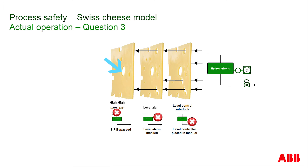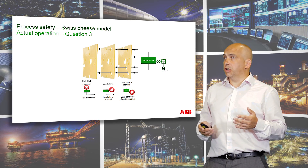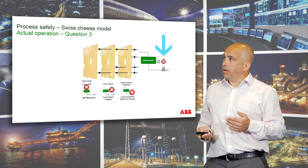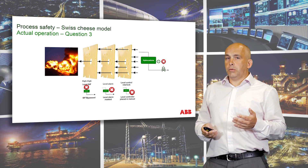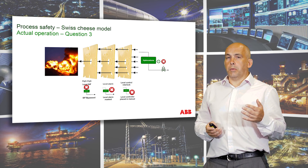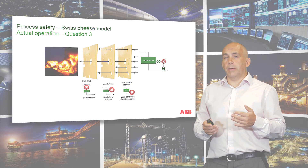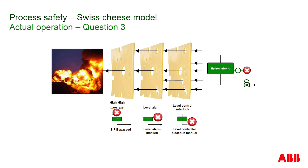We've introduced another hole in that final slice of Swiss cheese. Now we've got nice hole alignment in our Swiss cheese model, such that when we have a failure of the level control, we get the incident. This is why it's very important for our clients to understand the health of their barriers. As you can see, it's never a single act by a single person at a single point in time that leads to these process safety incidents.